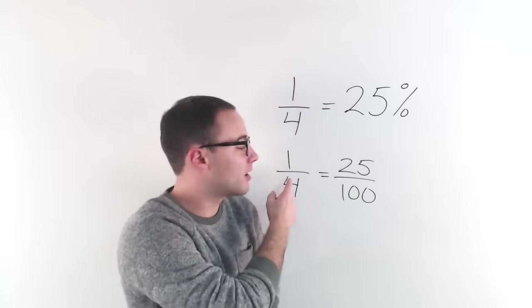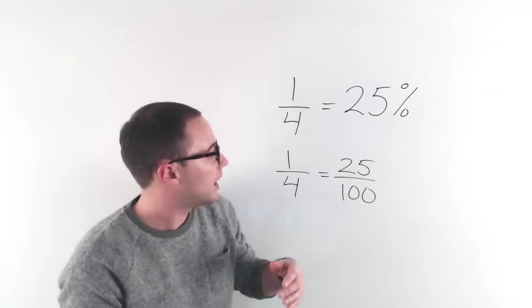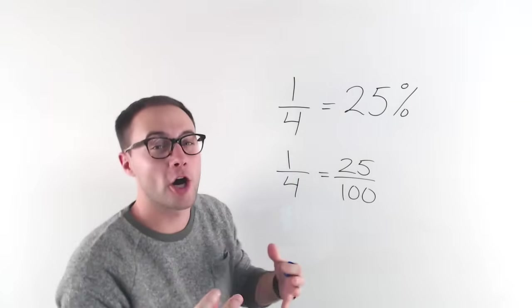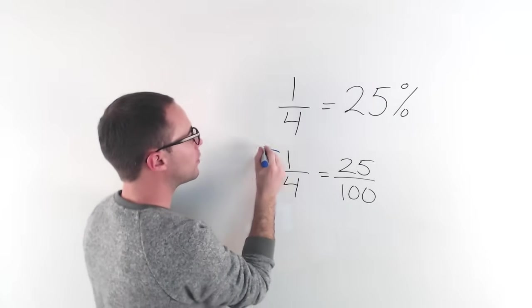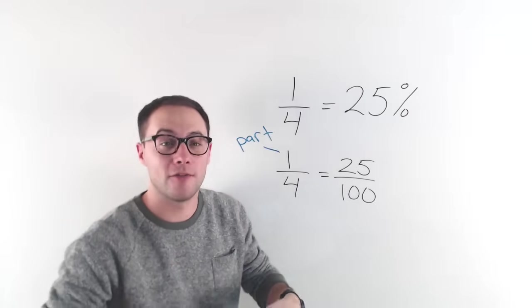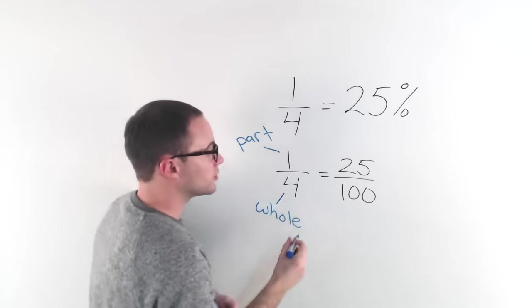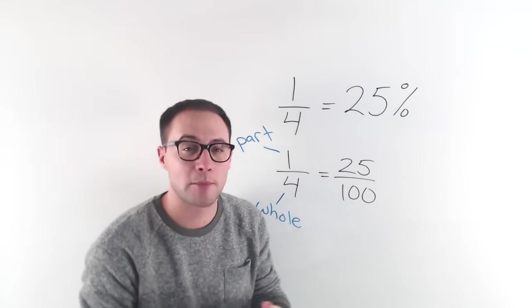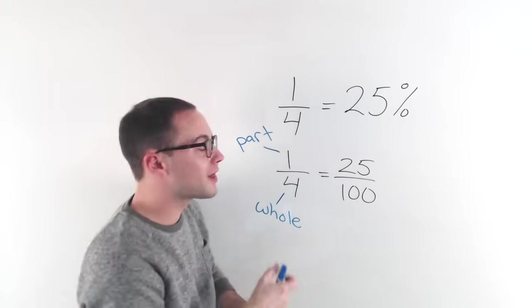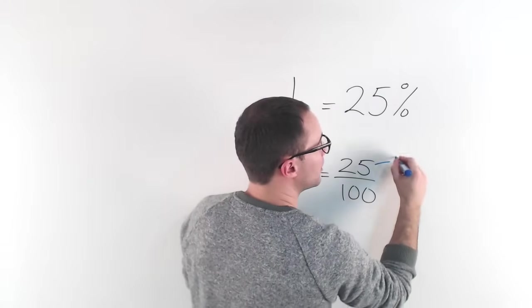These two fractions are equivalent to each other. Now, we're going to have three types of problems. First, finding the part. So this one represents a part, a part of a whole. That four represents the whole. So sometimes in these percent problems, you're going to be finding the part. Sometimes you're going to have to be finding the whole. And sometimes you're going to have to find the percent.